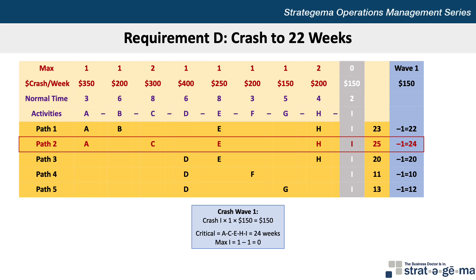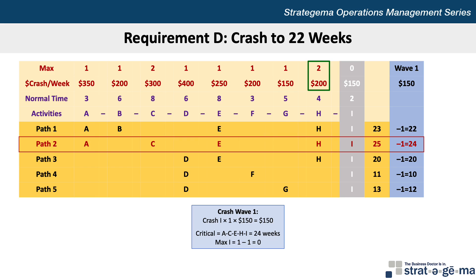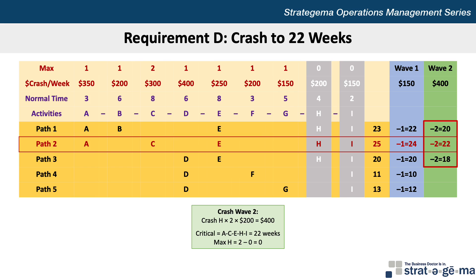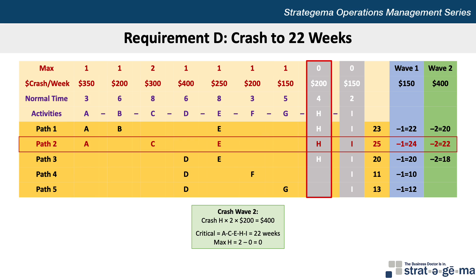We still look at the critical path first and see activities A, C, E, and H to pick from. Activity A will cost $350 to crash by one week, C $300, E $250, and H $200. H is the least expensive, so let's crash that activity. We can crash activity H by up to 2 weeks, being mindful of the impact on other paths since other paths may become critical. So for our second wave, we crash activity H by 2 weeks at a cost of $200 per week for a total cost of $400. We subtract 2 weeks off each path that contains activity H, which are paths 1, 2, and 3, making path 1 20 weeks, path 2 22 weeks, and path 3 18 weeks. H can no longer be crashed, so that column is greyed out as well.